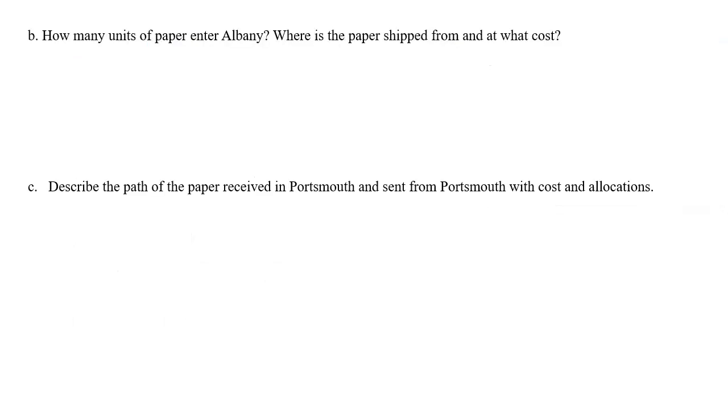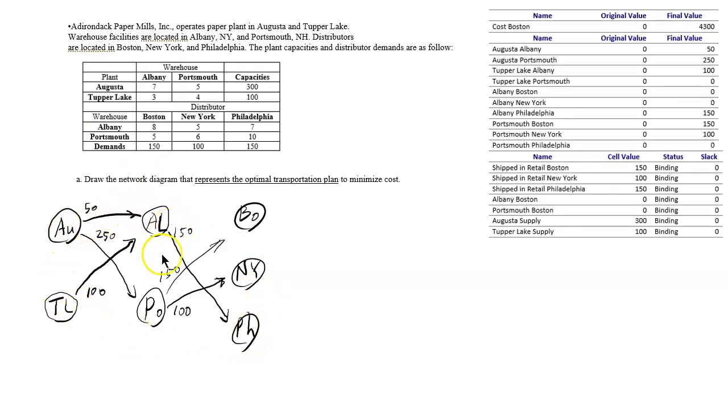How many units of paper enter Albany? Where is the paper shipped from at what cost? Well, you just have to look at this network diagram again. It's about Albany and you see that there's 50 coming from Augusta and 100 coming from Tupper Lake.